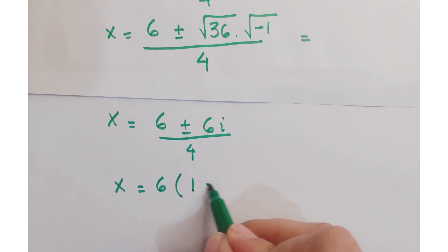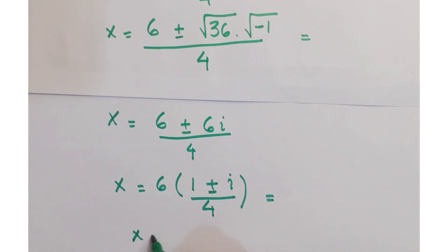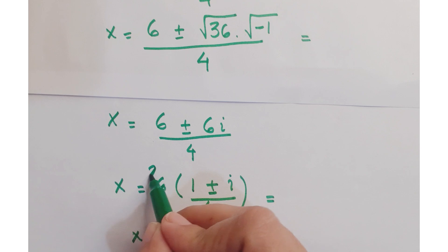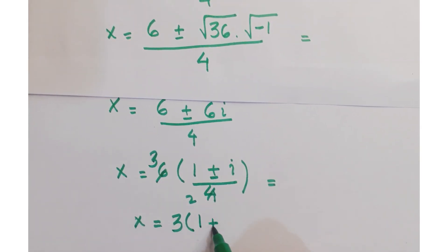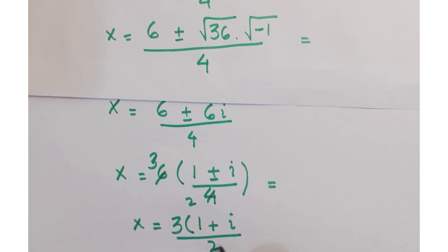you get 1 plus minus i upon 4. This is equals to, these get cancelled, you get 3 times 1 plus minus i upon 2.